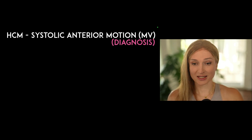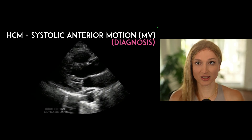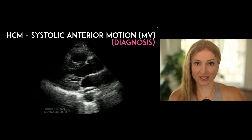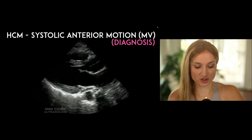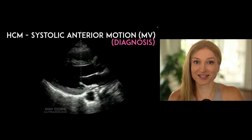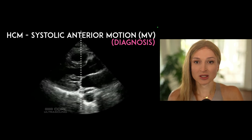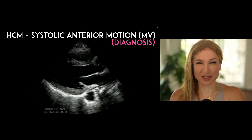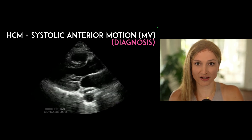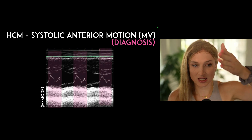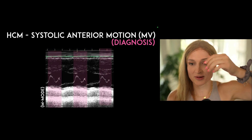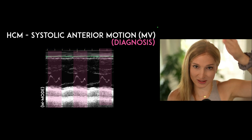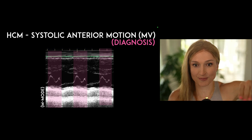A way you can diagnose systolic anterior motion is by looking at the cardiac cycle with a good parasternal long axis view, utilizing your M-mode cursor. You're going to place it basically exactly where you would when measuring EPSS to look for systolic function. With M-mode, you're measuring in the X-axis the change in distance of things along that M-mode line over time.